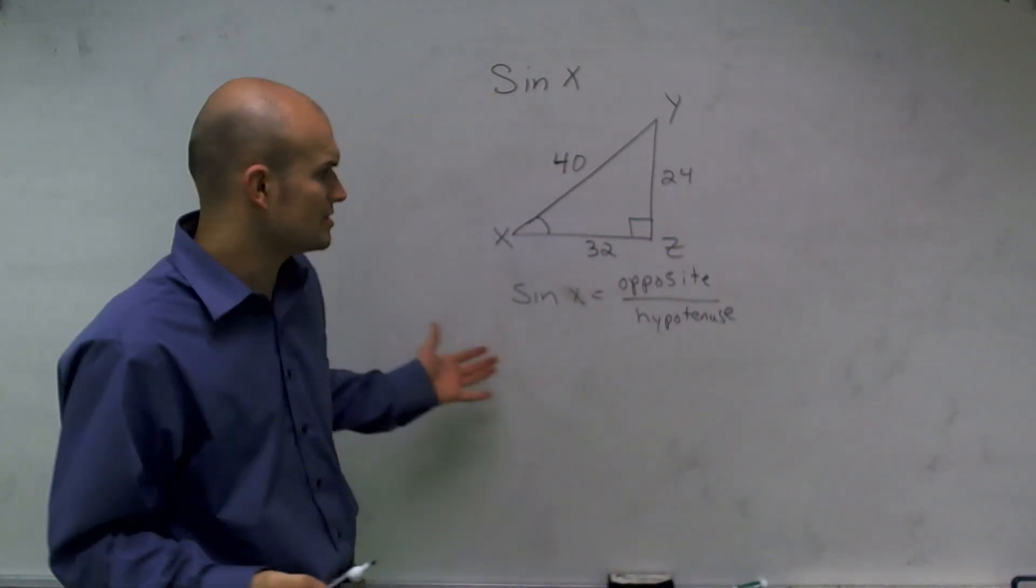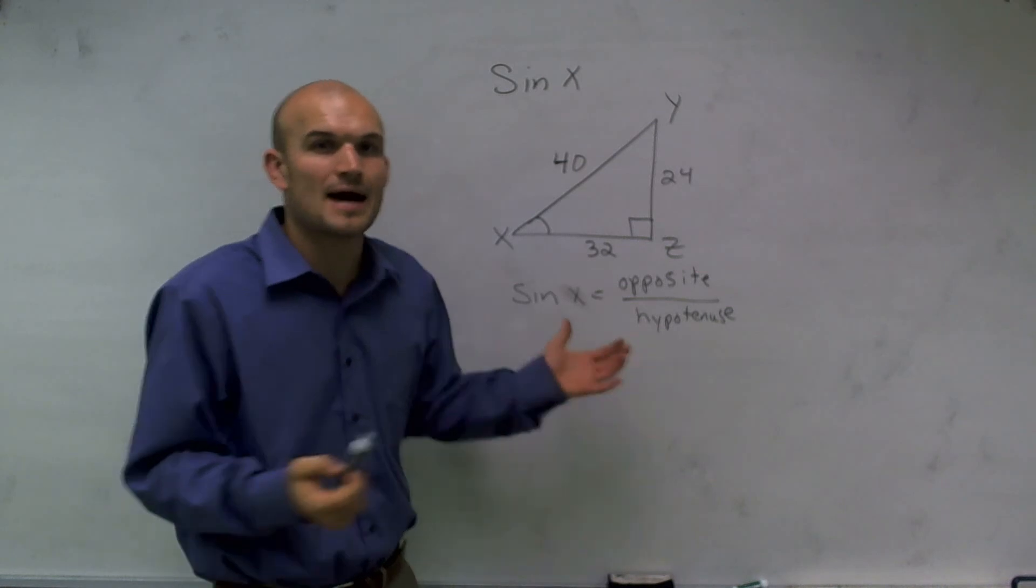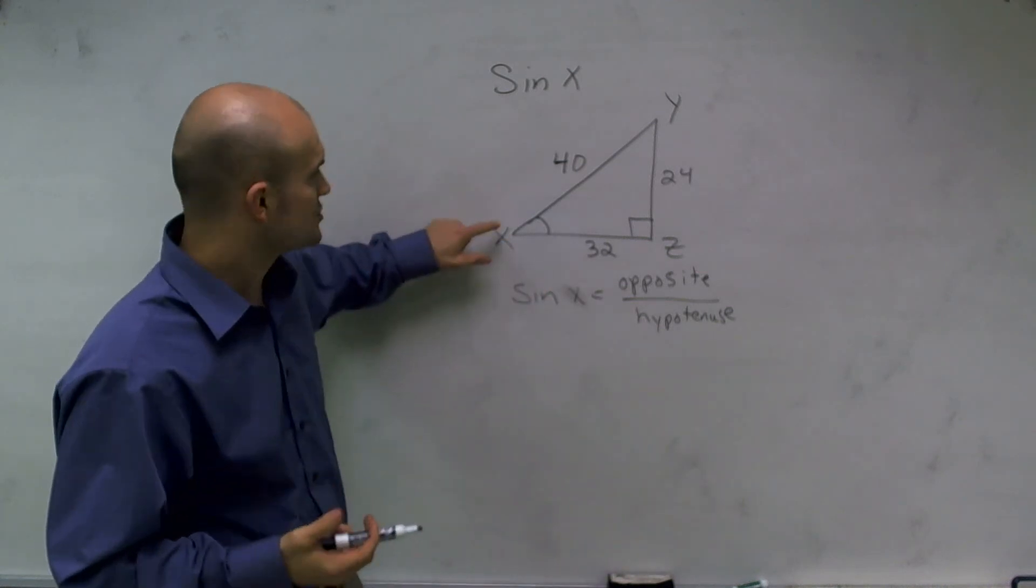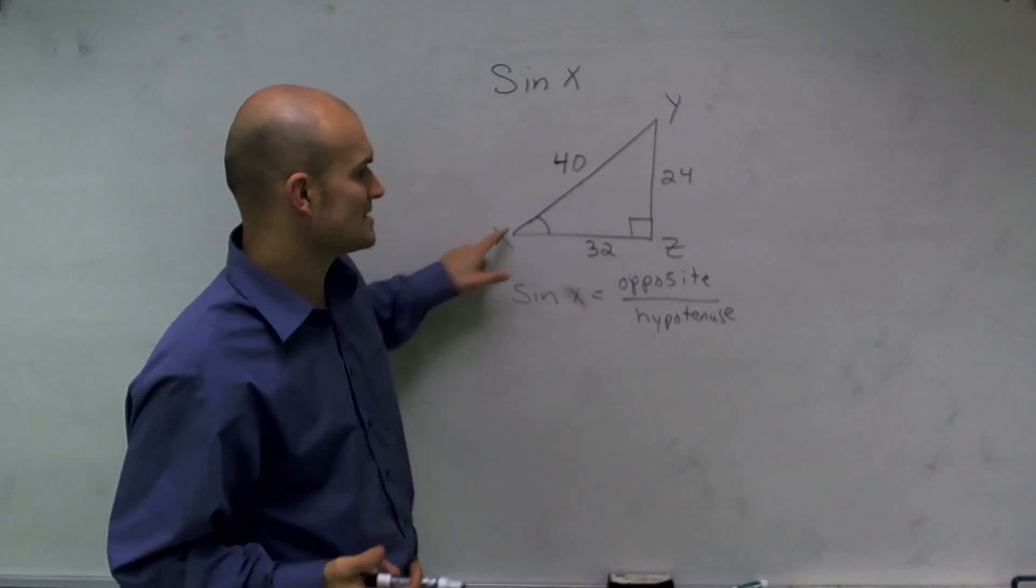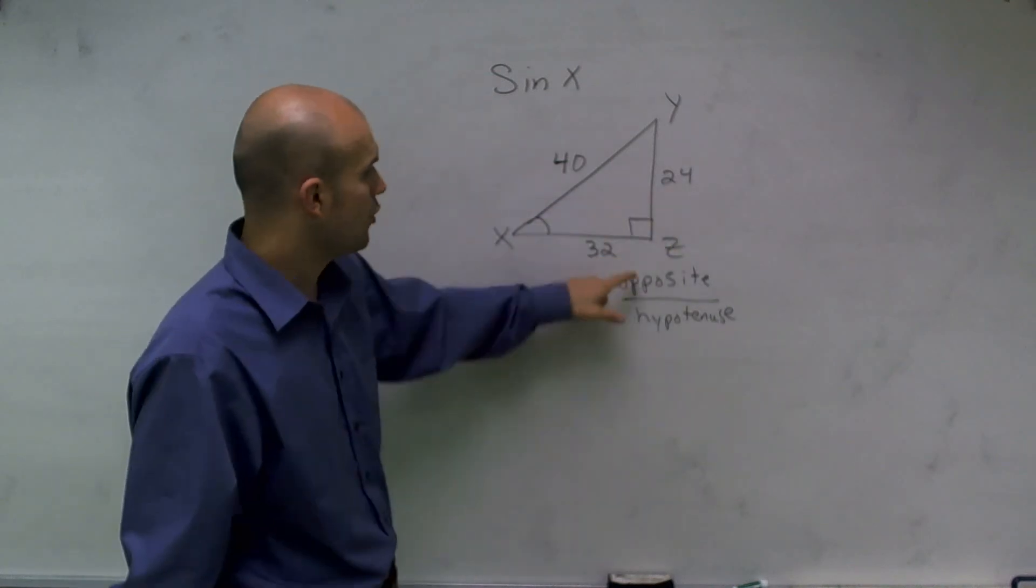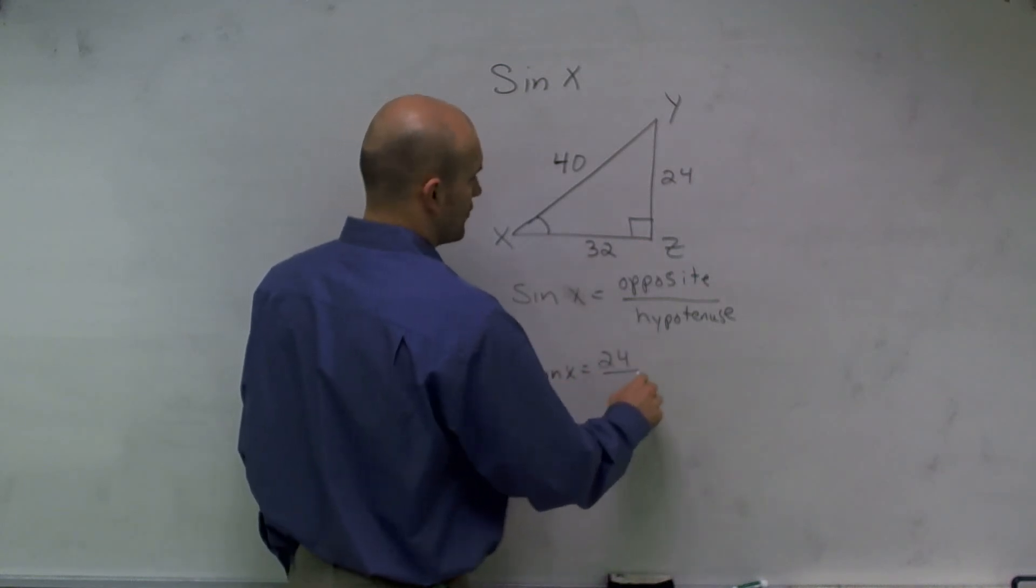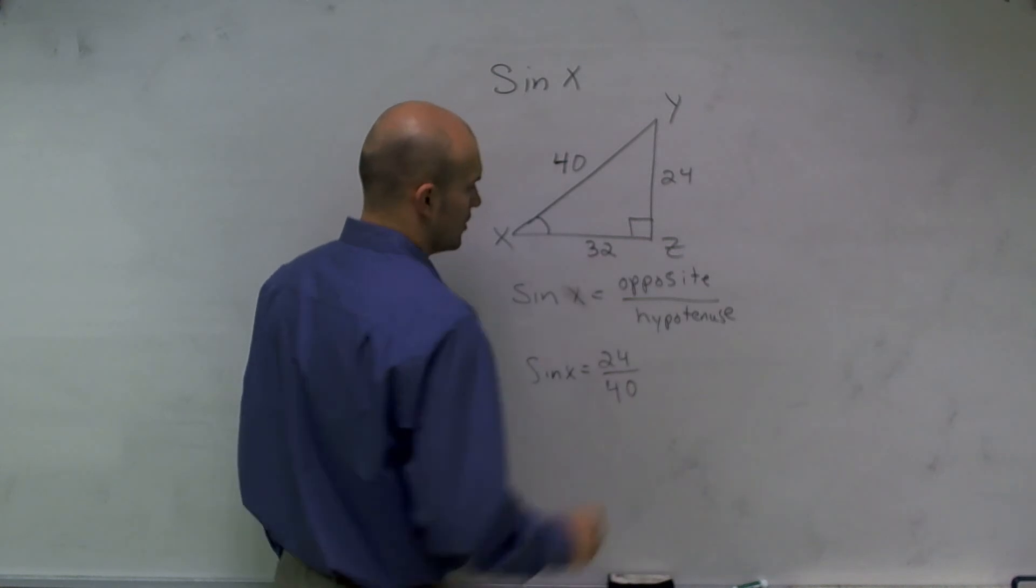And you might say, well, which is the opposite and which is the hypotenuse? Well, it's always at the angle you're trying to find. So sine of x is going to equal my opposite side, which will be 24, over my hypotenuse, which is 40. So therefore, sine of x equals 24 over 40.